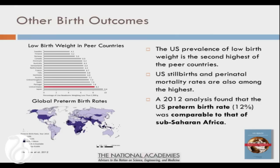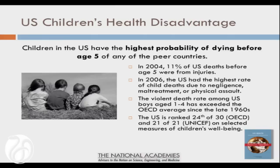It's not just birth outcomes — on a variety of measures related to children's health, American children are less likely to reach age 5 than children in other high-income countries: higher rates of deaths, higher rates of injuries. Multiple organizations like the OECD and UNICEF have ranked the US lowest among high-income countries in terms of children's health.